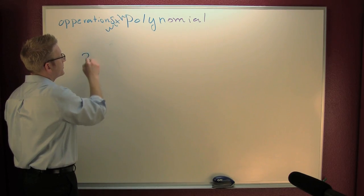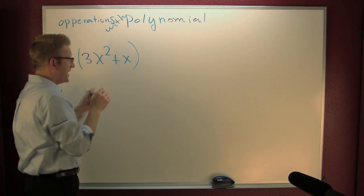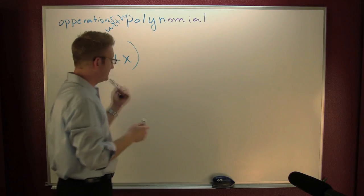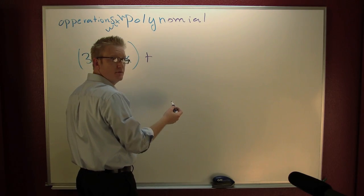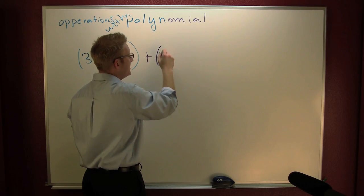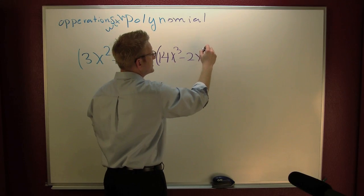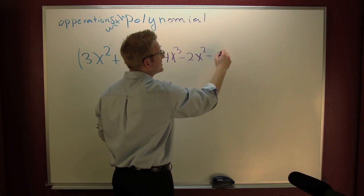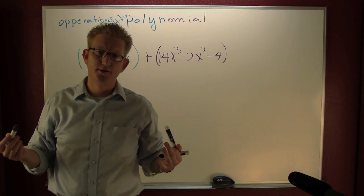3x squared plus x. Let's add that polynomial. Have a favorite? No? Okay. 14x to the third minus 2x squared minus 4.